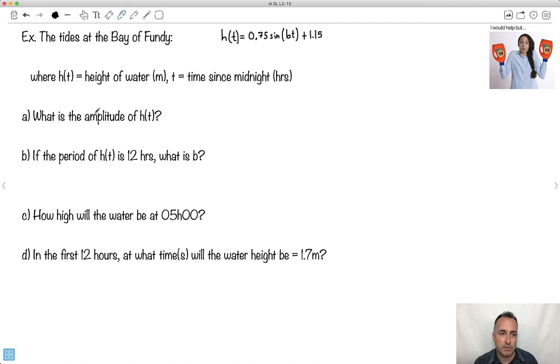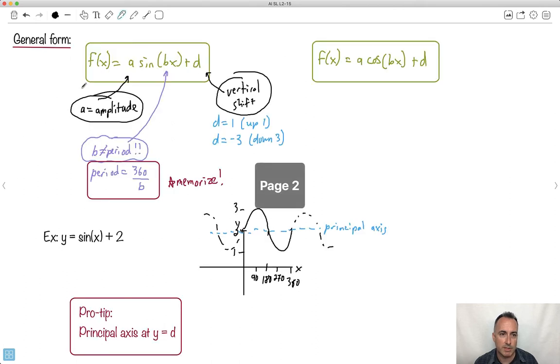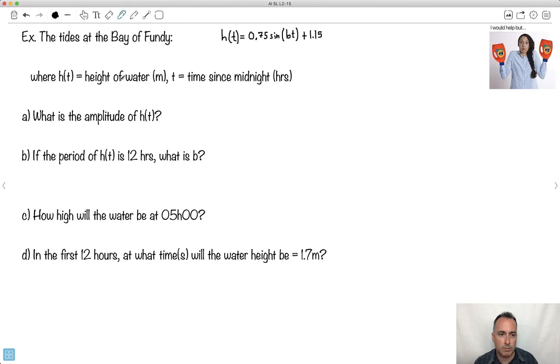The first question is, what is the amplitude of this? Well, if you remember, the letter in front is the amplitude directly. So in this case, the amplitude is just a. In this case, a is 0.75, so the amplitude is 0.75, must be in meters. That was actually kind of easy, wasn't it?